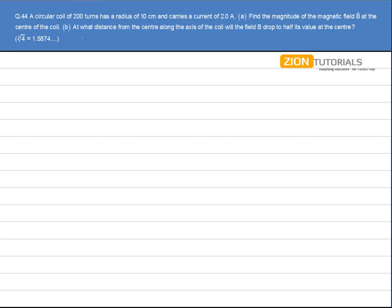A circular coil of 200 turns has a radius of 10 centimeter and carries a current of 2 Ampere. Find the magnitude of magnetic field B at the center of the coil.